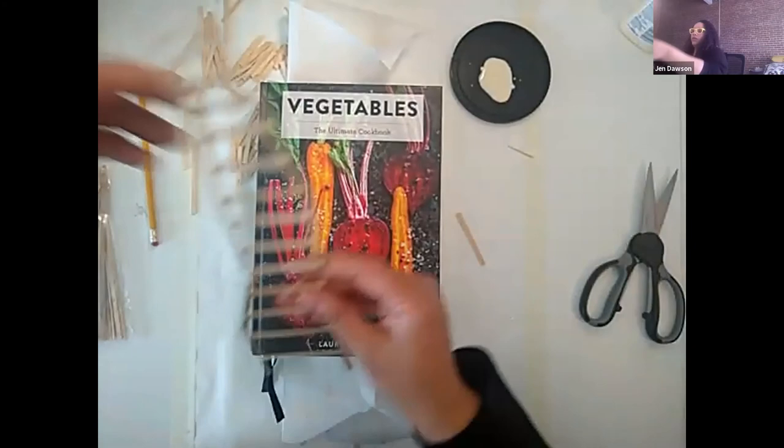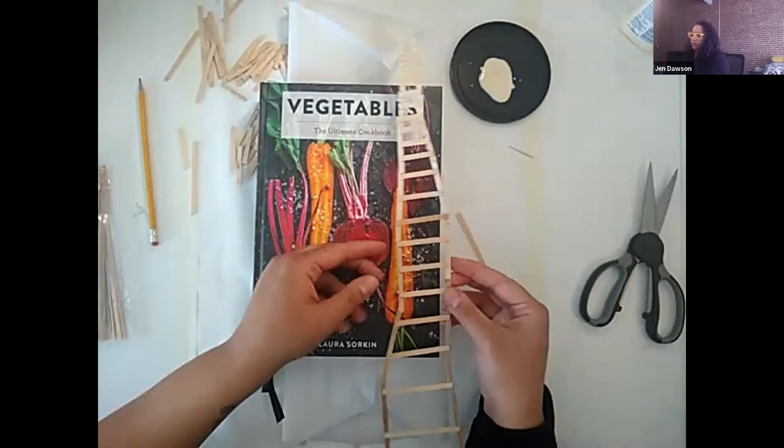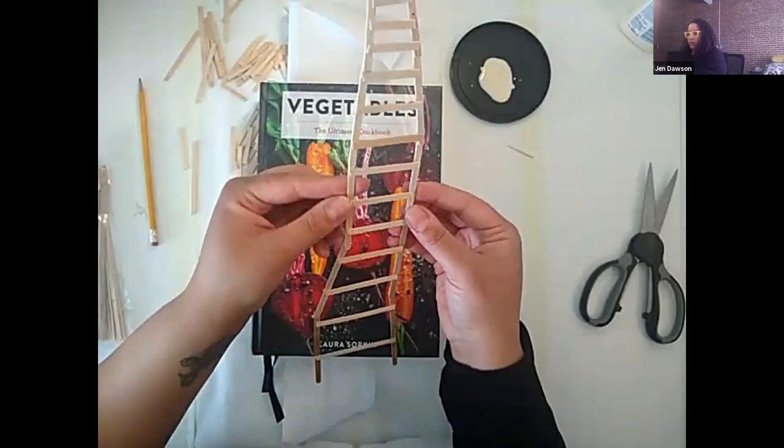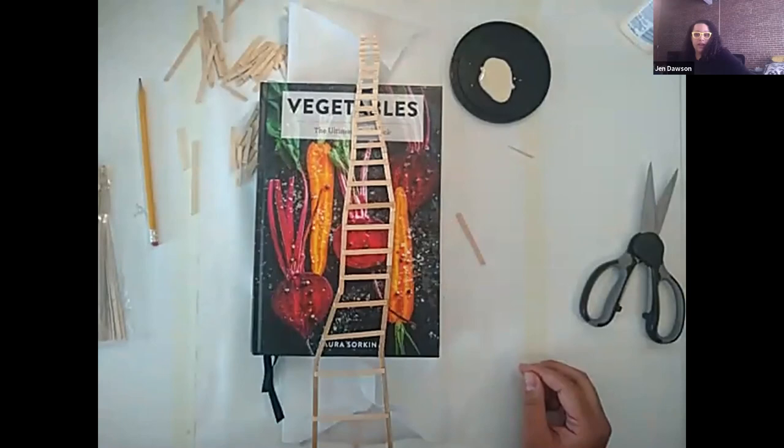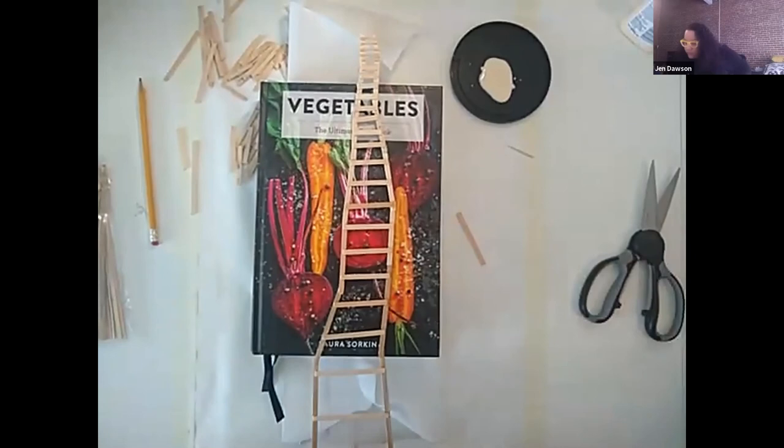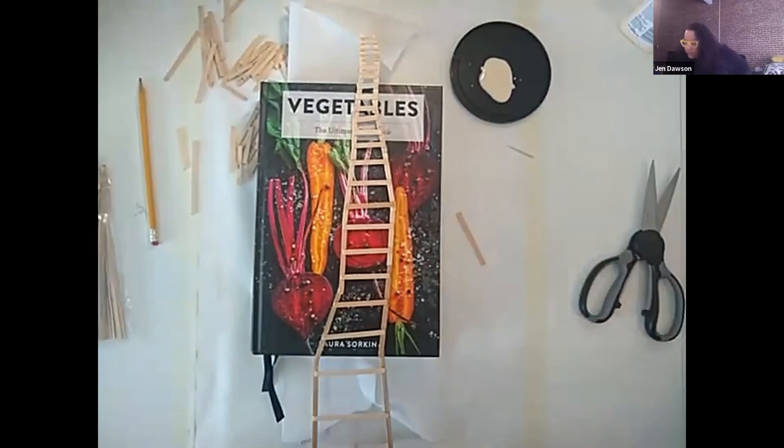And then when you're done, you have your own ladder for Booker T. Washington. And you can play with the perspective. You can make it look like it's going into space. You can play with dimensions. And you can hang it through a window and have it shine light in different places. So there's a lot of things that you can do with it. So I think that's all for now. And I'll hand it over to Tiffany.